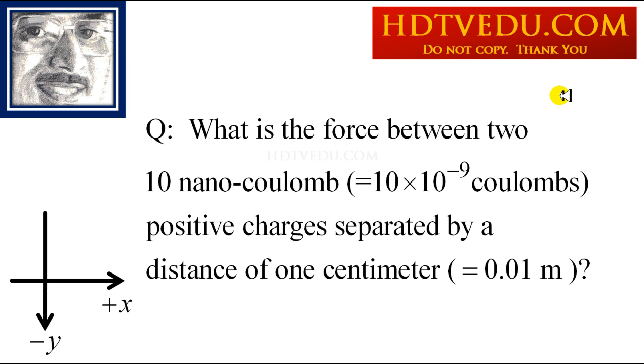So Q1 equals 10 times 10 to the power of negative 9. Q2 equals 10 times 10 to the power of negative 9. D equals 0.01. K is roughly 9 times 10 to the power of 9.